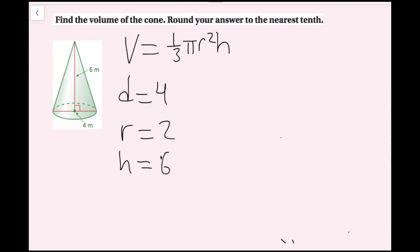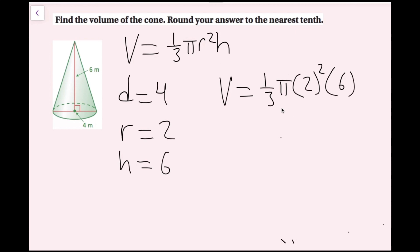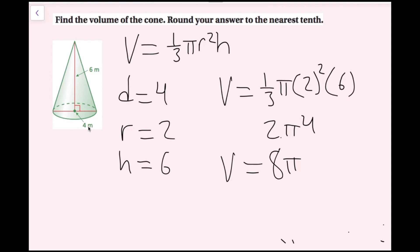Now I'm going to plug all these values into the equation. Volume equals one-third pi times 2 squared times 6. First, 2 squared is 4. Then one-third times 6 is 2, so it becomes 2 times pi times 4. And 2 times 4 is 8, giving us 8 pi. So my exact answer is 8 pi cubic meters.